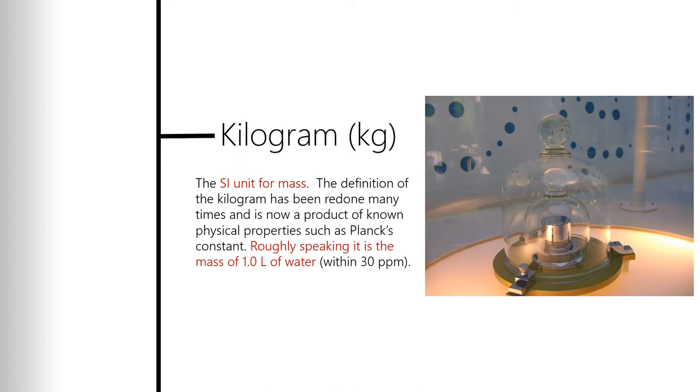So they are, they've redefined what a kilogram is based on an immutable constant called Planck's constant. Now, that is way beyond the scope of where we're at in this course. You've got to get some deep ugly physics to understand how Planck's constant, which is an electrical value, can be linked to a mass, but it's doable. We can say, with a good estimation, like I say on the slide, within 30 parts per million, it's still roughly equal to the mass of one liter of water.